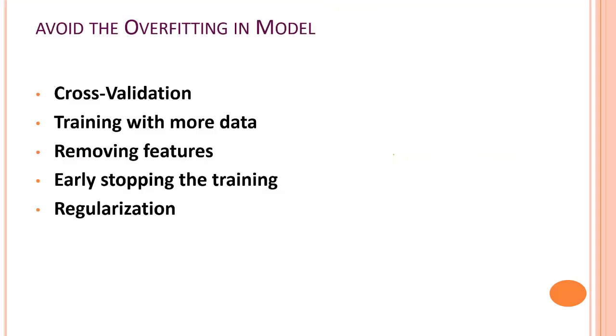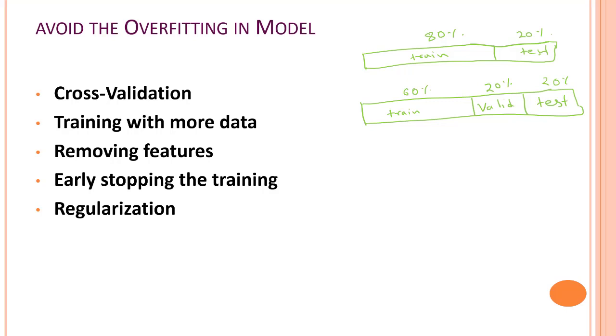Now, before ending this video, let's look into how you can avoid overfitting in model. You can use cross-validation. Now, what do we mean by cross-validation? So let's take our data set. Before, what we used to do was we used to take 80% of our data for train and 20% of our data for test. Now, what you can do is you can break it further more. That is, we will take 60% of our data for training and 20% of our data for validation and 20% of our data on the test set.